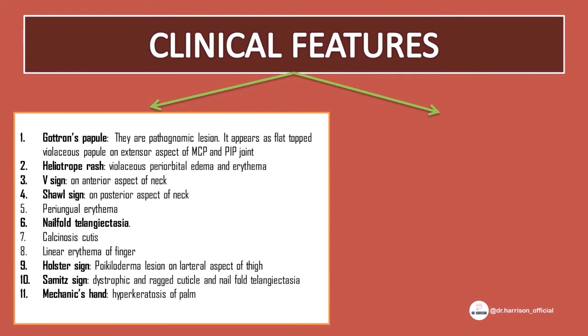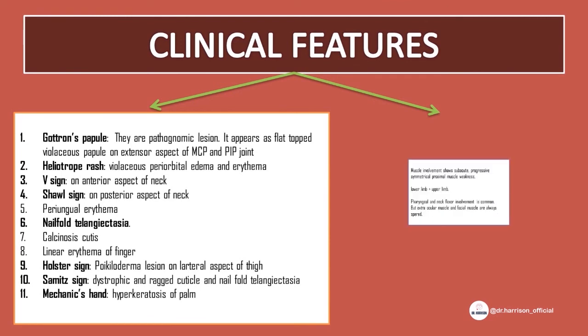Muscle involvement shows subacute, progressive, symmetrical proximal muscle weakness, which is more pronounced in the lower limb than the upper limb. Pharyngeal and neck flexor involvement is common, but extraocular muscles and facial muscles are always spared.